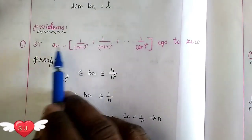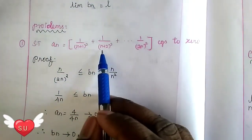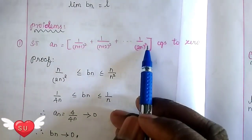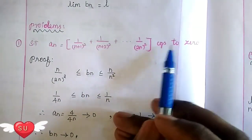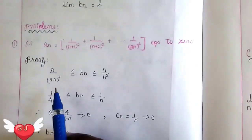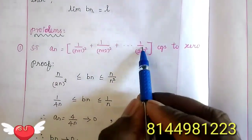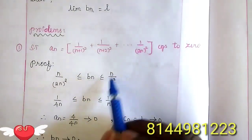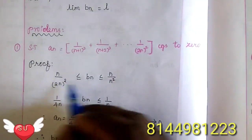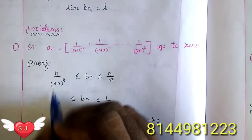Show that an = 1/(n+1)² + 1/(n+2)² + ... + 1/(2n)² converges to 0. We can write: n divided by 2n squared is less than or equal to bn, which is less than or equal to n divided by n². In the middle of the problem, 2 to the power n gives 4, and n squared gives 4n.